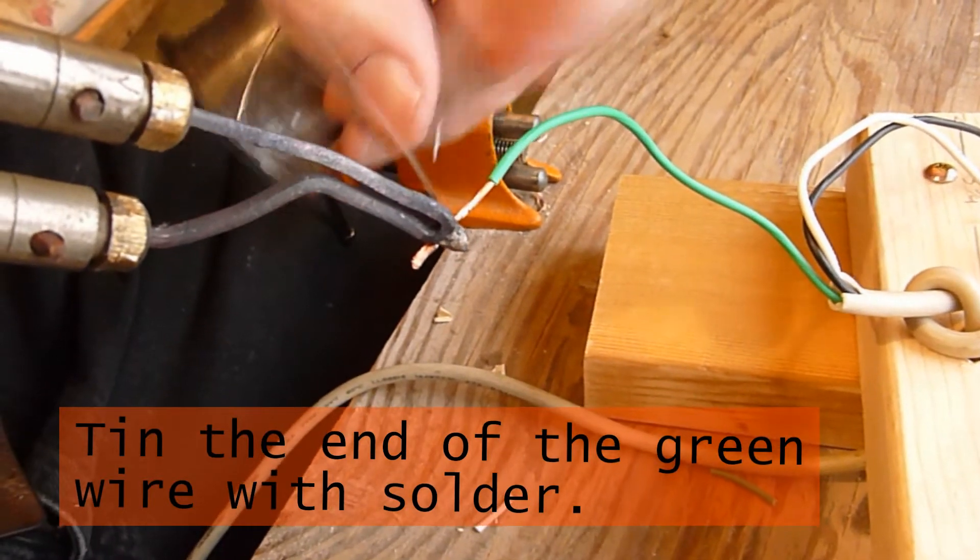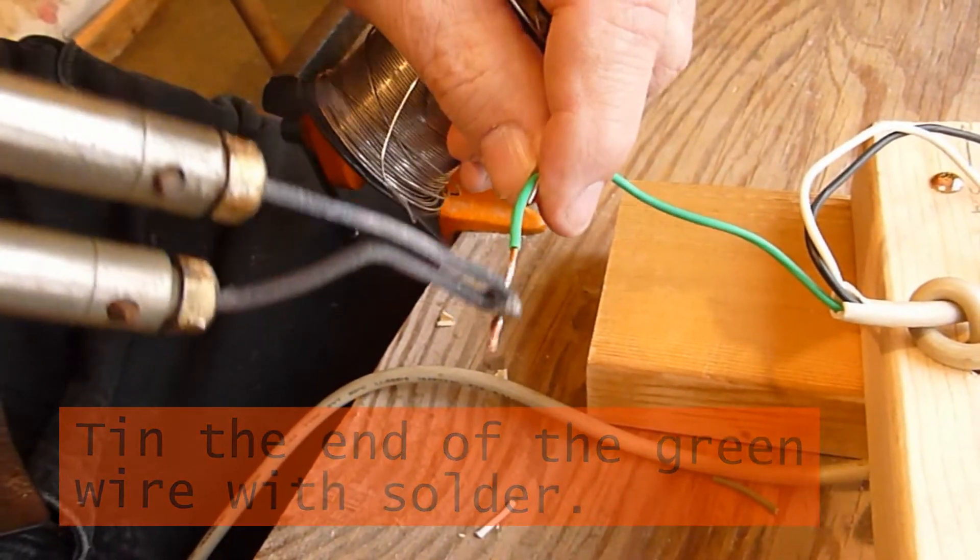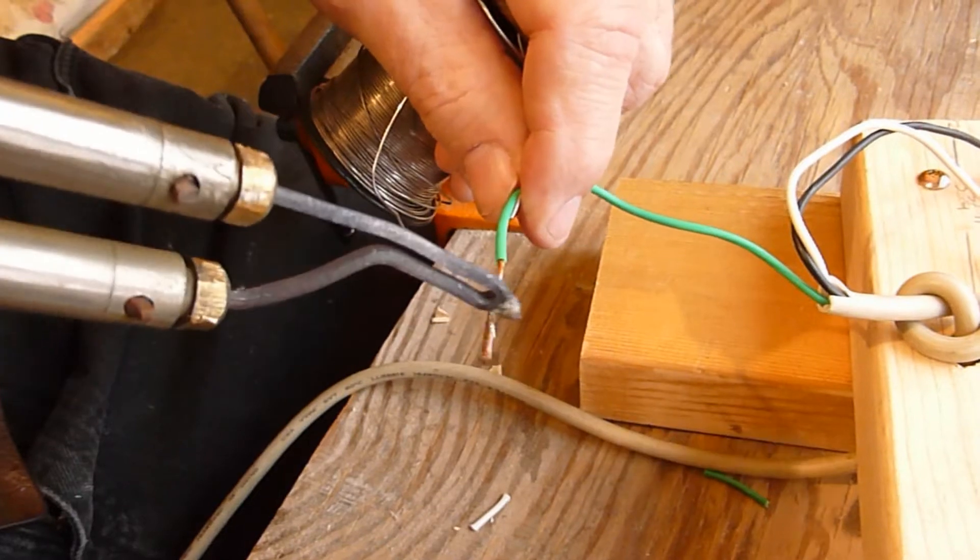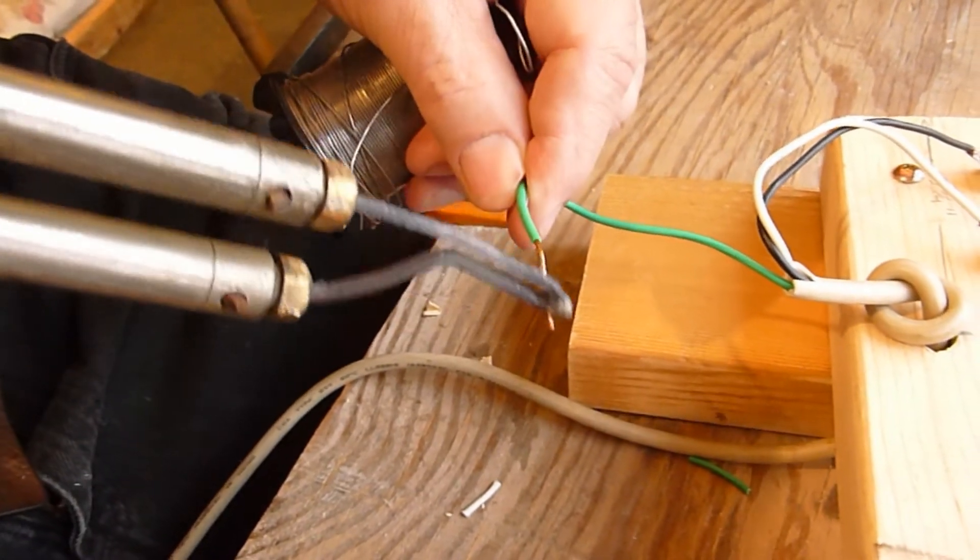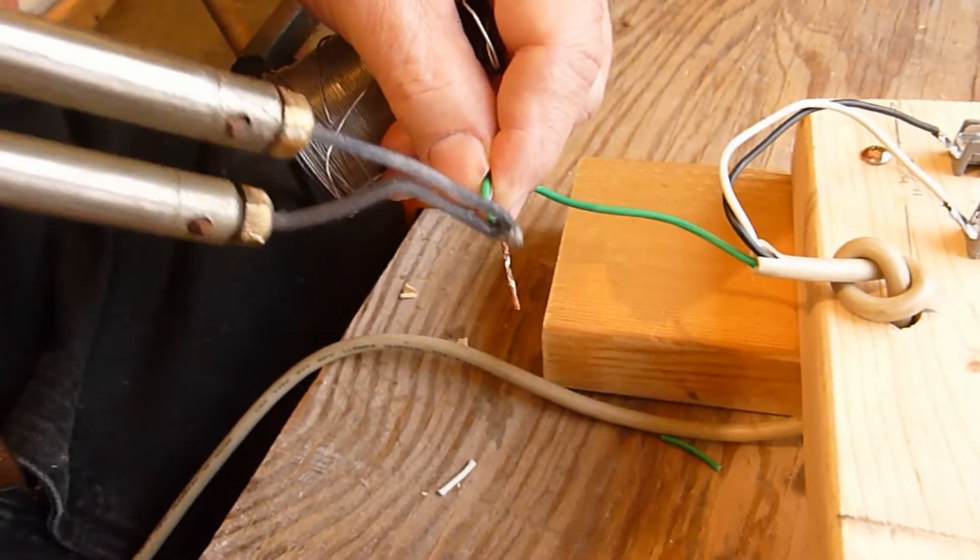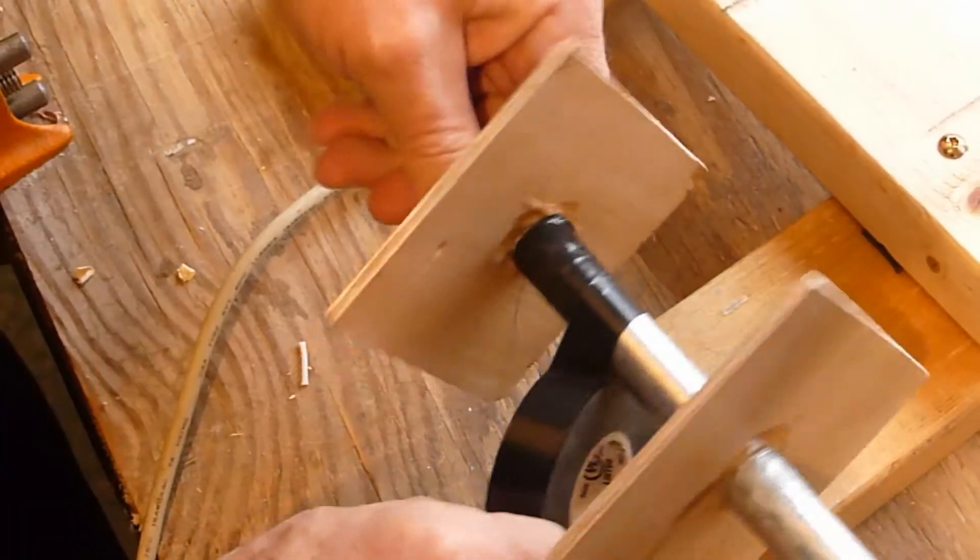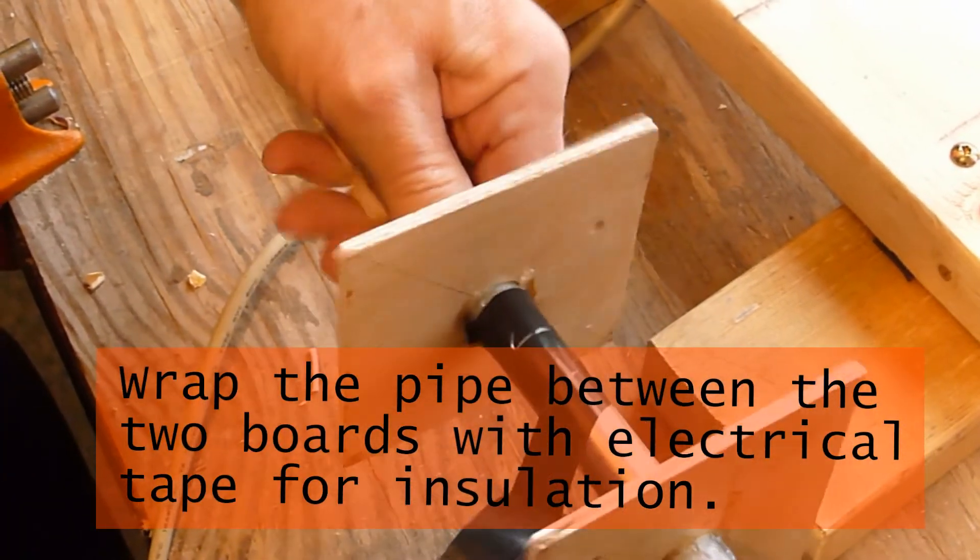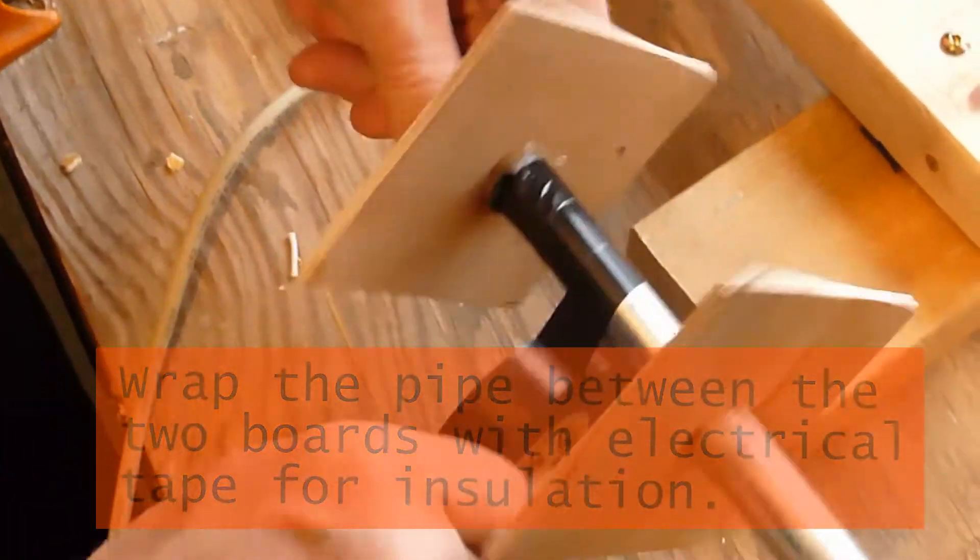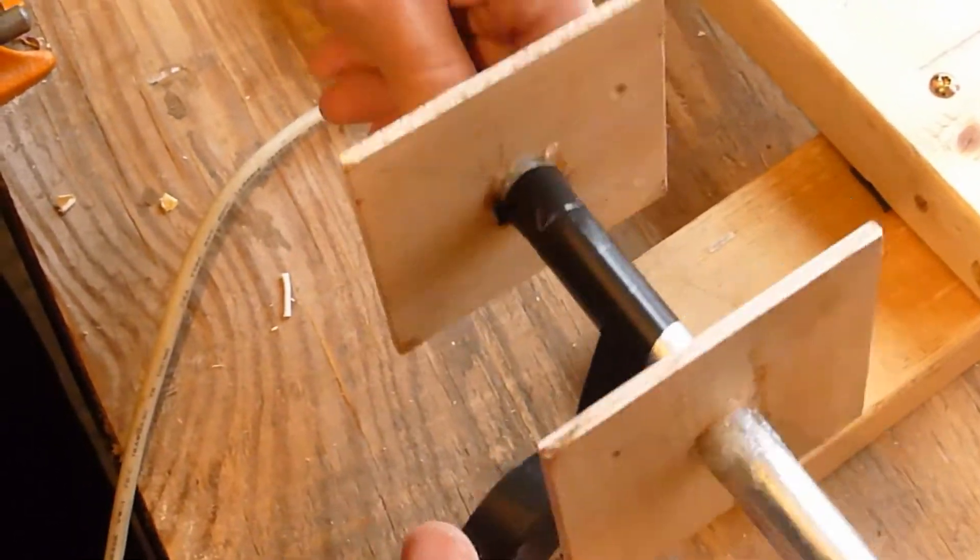Next, tin the end of the green ground wire with solder. This will help when we make the connection to the rod with the hose clamp. In addition to fuses, we take another safeguard by wrapping the steel rod with electrical tape.